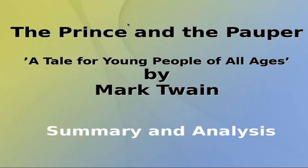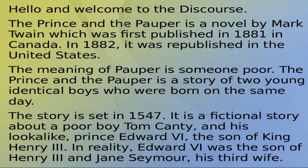The Prince and the Pauper: A Tale for Young People of All Ages by Mark Twain — Summary and Analysis. Hello and welcome to the Discourse. The Prince and the Pauper is a novel by Mark Twain which was first published in 1881 in Canada, and in 1882 it was republished in the United States.